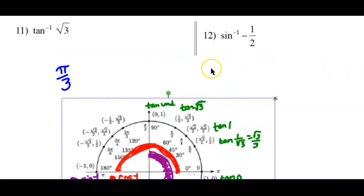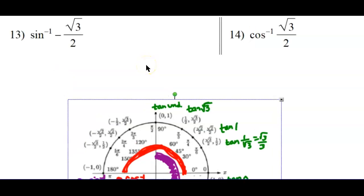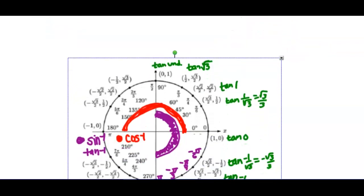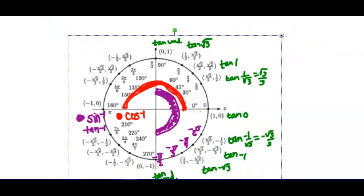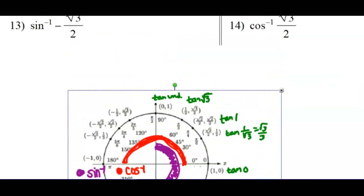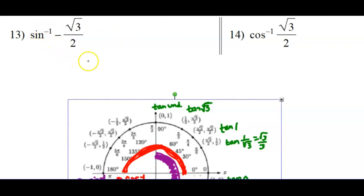So that's the answer to number 11 — you have to do the evens. Number 13 is: where is the sine of negative square root of 3 over 2? The sine is the y-coordinate, so that is happening way down here at negative square root of 3 over 2. Remember, for sine we're looking in quadrants 1 and 4. So we have to answer negative pi over 3. We can't call that 5 pi over 3, because that doesn't fall in the restricted domain for inverse sine.